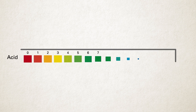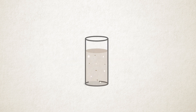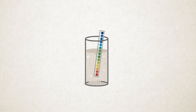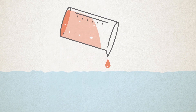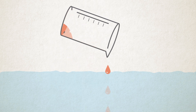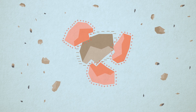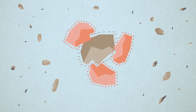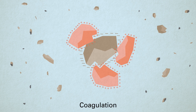Firstly, we raise the pH level of the water by using a hydroxide such as lime. This prepares the water for the chemical reaction in the next steps. Then we disrupt the negative charge of the colloids by adding a coagulant. The coagulant has a positive charge which neutralizes the negative charge of the colloids. This is coagulation.